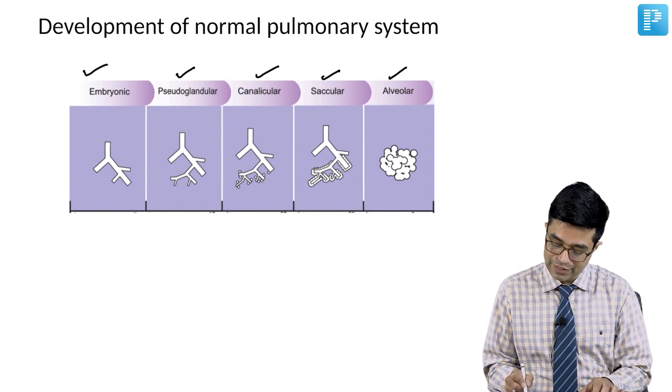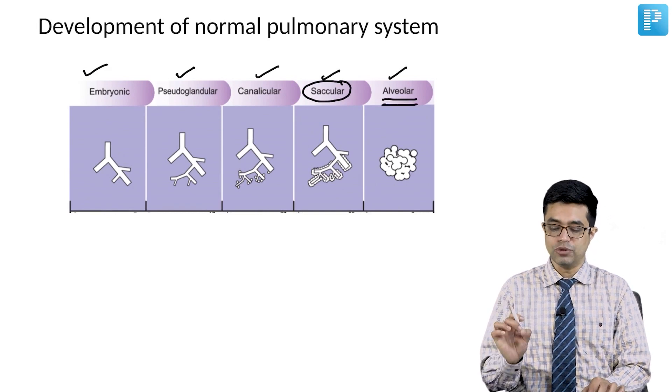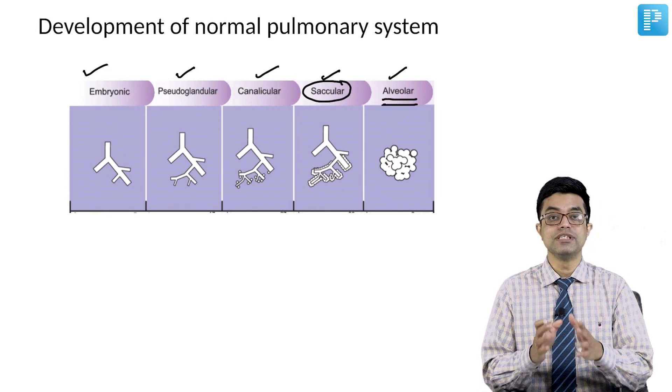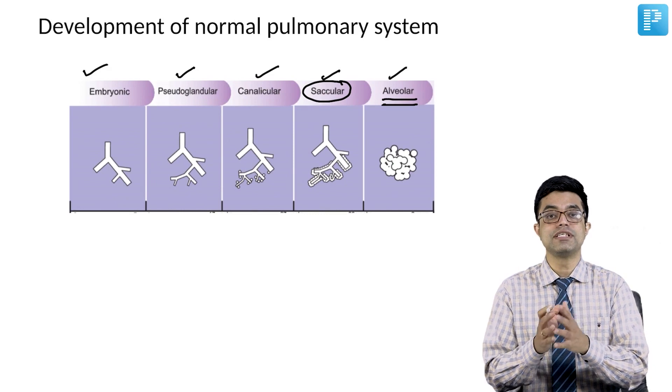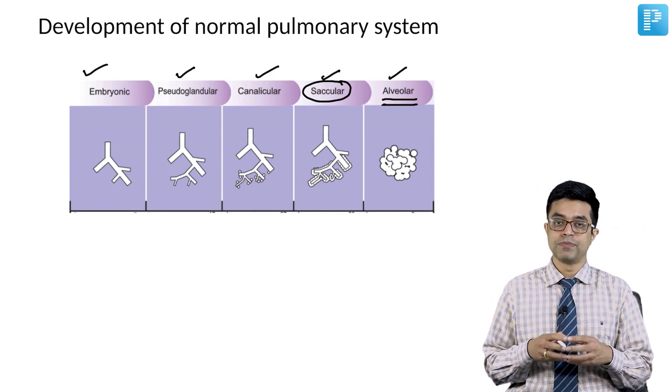Primitive alveoli can occur in the saccular stage also, but mature alveoli are present in the alveolar phase. These are the five stages you are supposed to remember.